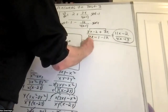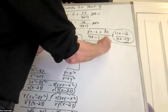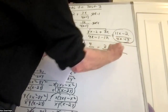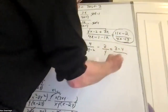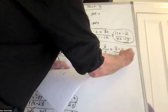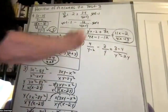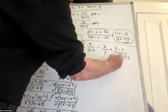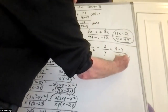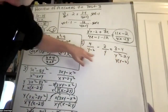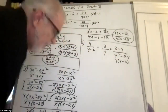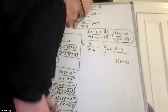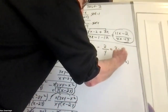Problem number 5: 4 over y minus 2, minus 2 over y, equals 3 minus y over y squared minus 2y. I'm going to factor this immediately. This is the only thing that needs to be factored, and it factors into y times y minus 2 — which matches the y minus 2 over here.